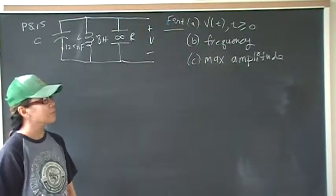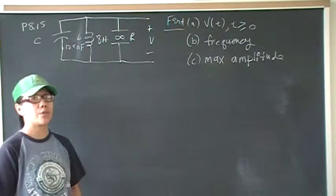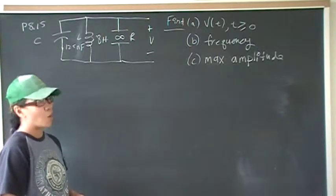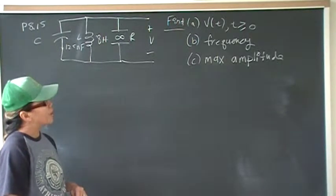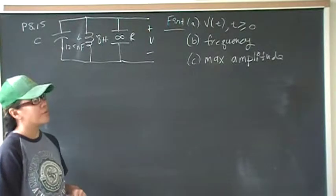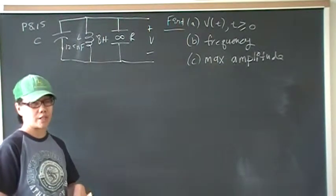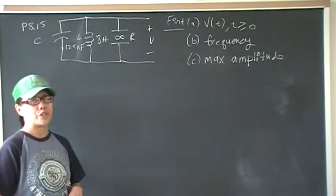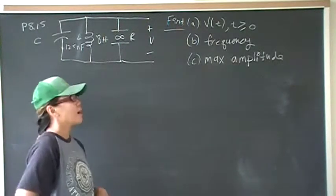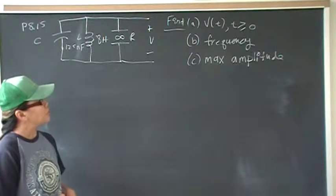For part a, you're going to want to first of all find the damping because that tells you what form the general equation will take. And when you do that, you're going to come across another step of finding di/dt, and so you'll use KCL to find IC, the capacitor current.